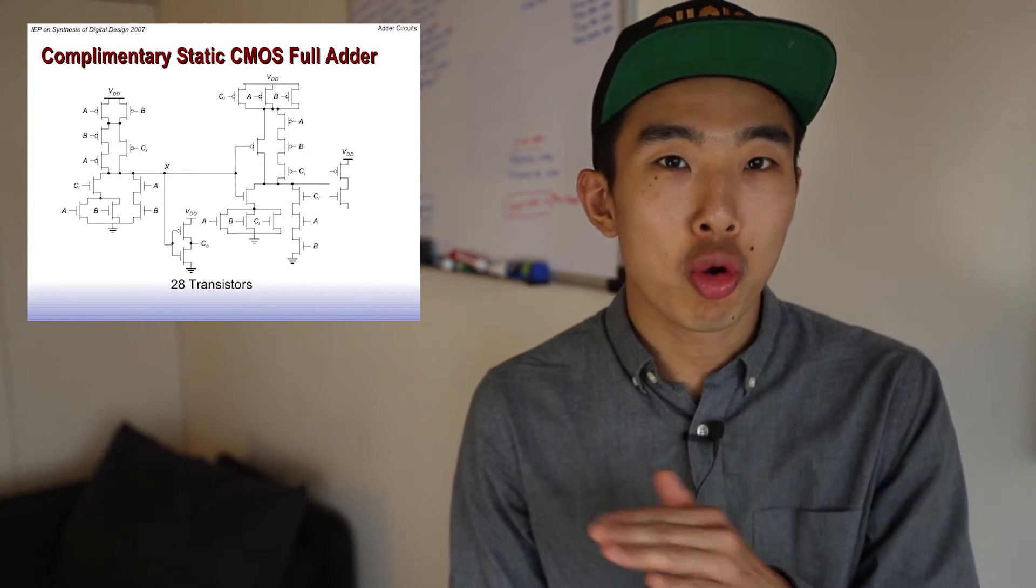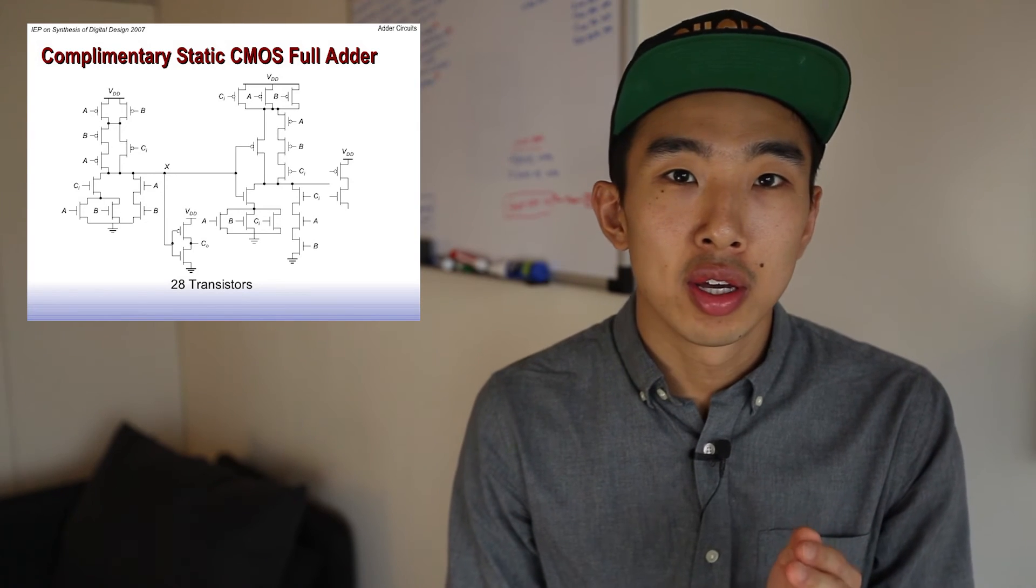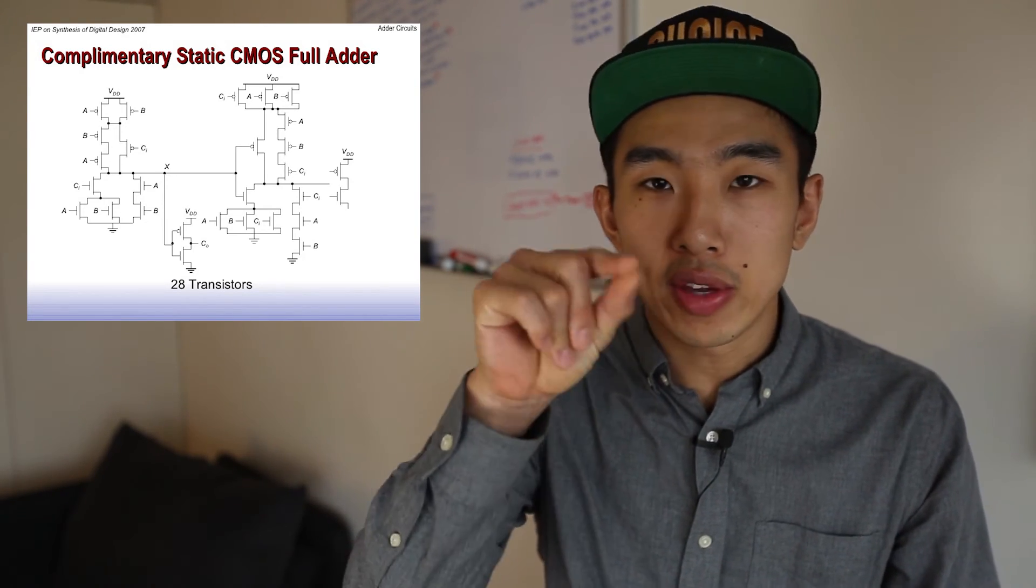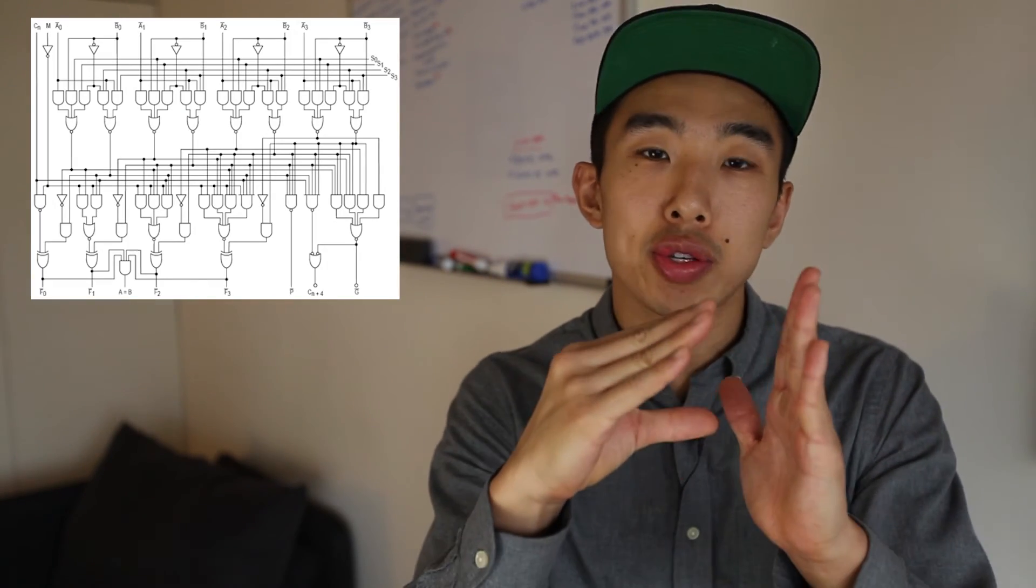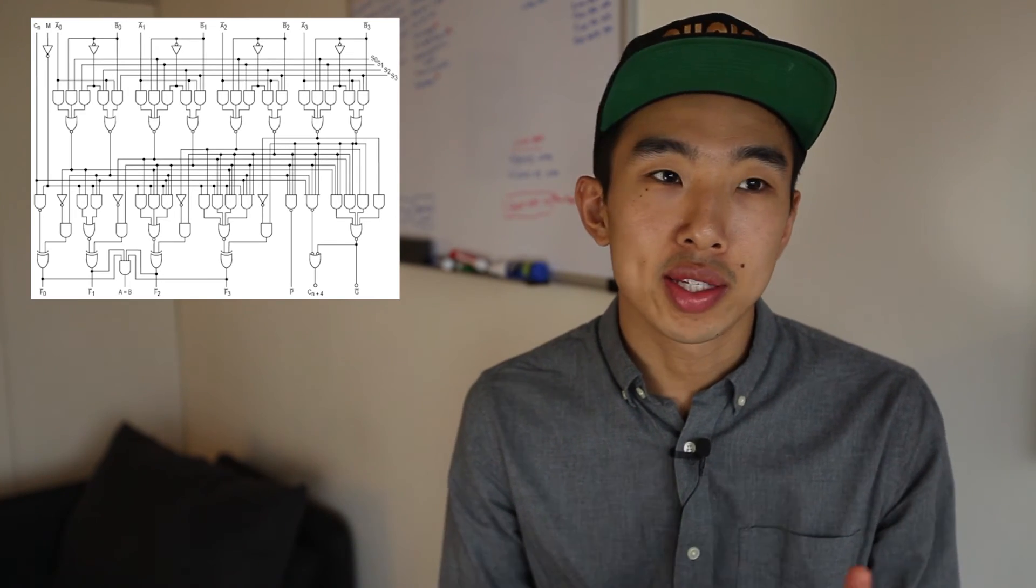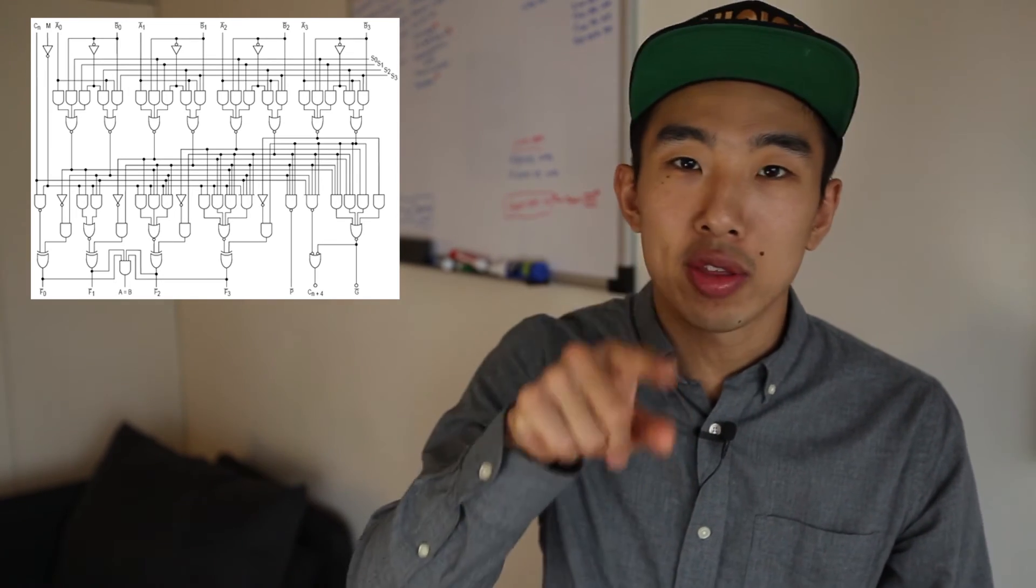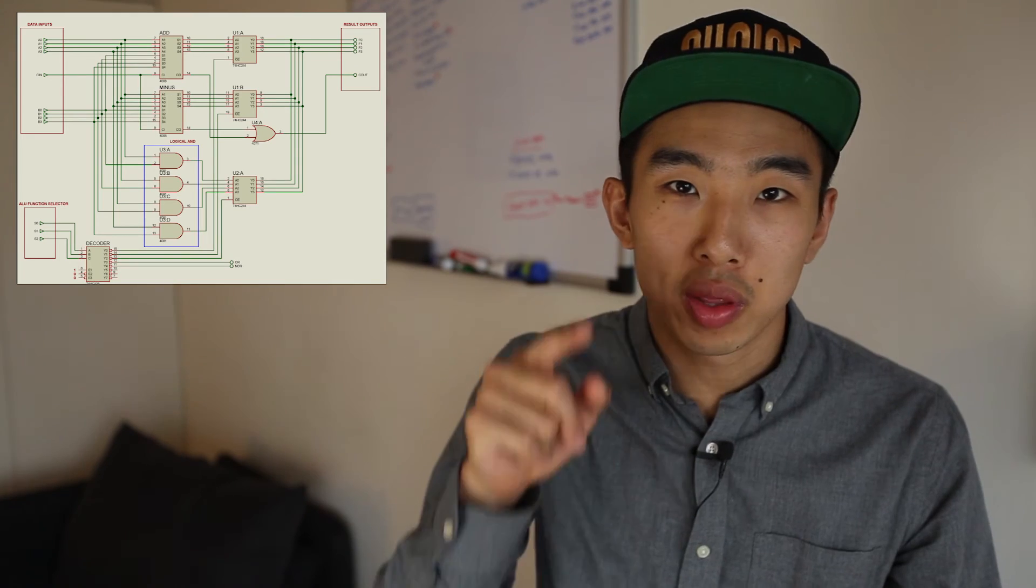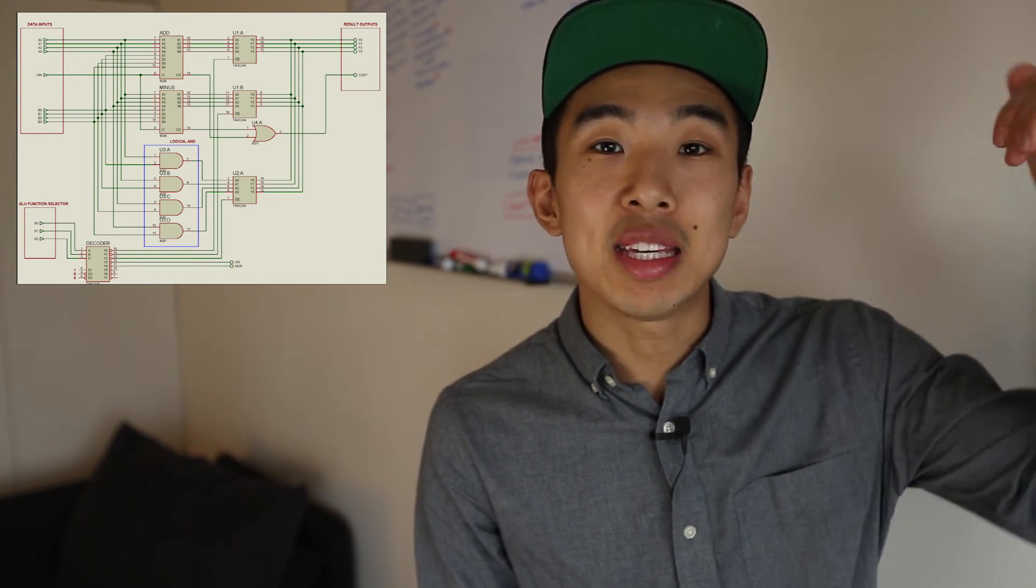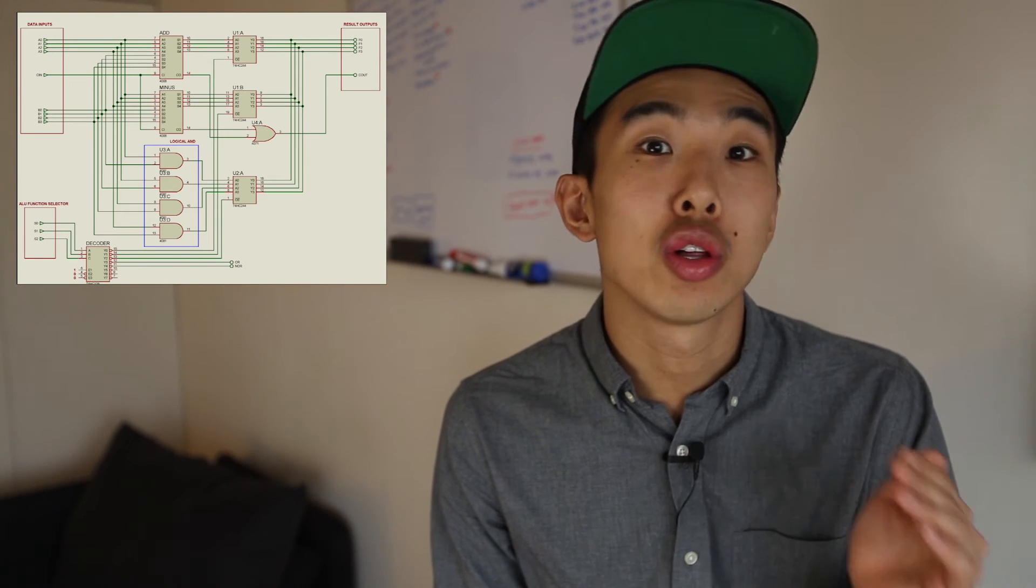Once things start getting more and more complicated, people also draw things a little more simply, right? No one actually draws VDD and ground all the time, right? They still use those triangles, boxes, and squares, right? And when things get even more complicated, they just draw things with bigger boxes, with little boxes inside them. All right. So we just kind of took the deepest dive to see what it looks like on the ground level.